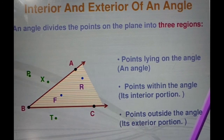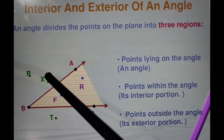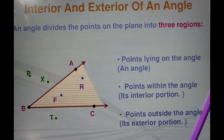The next is the point outside the angle. For example, points X and P are outside of the angle.